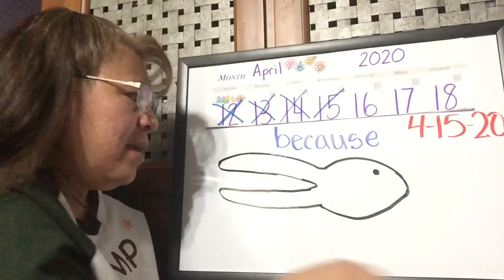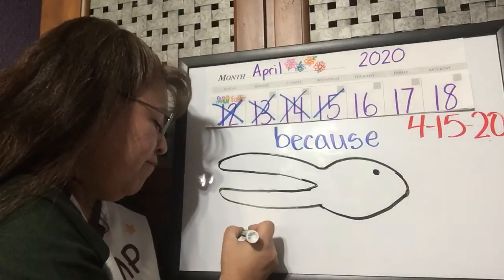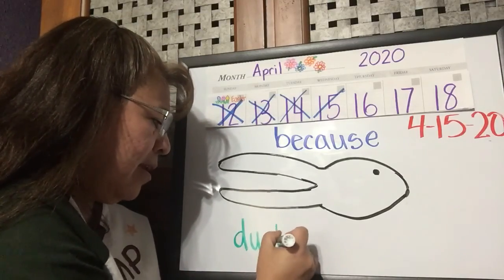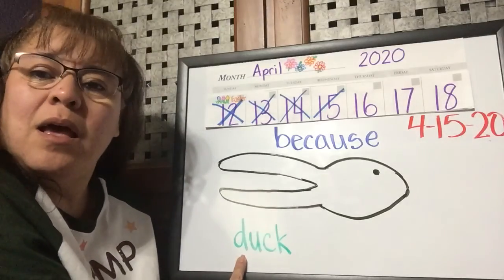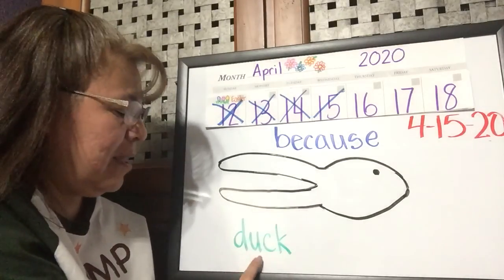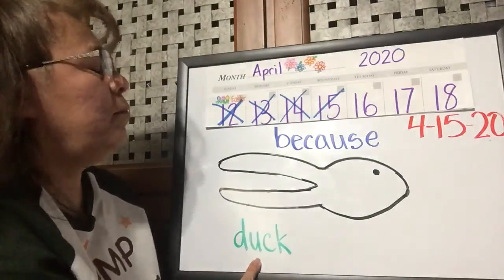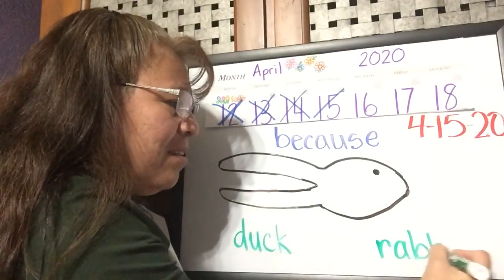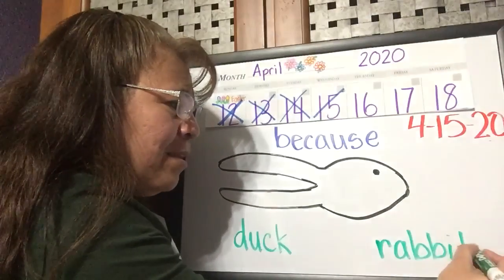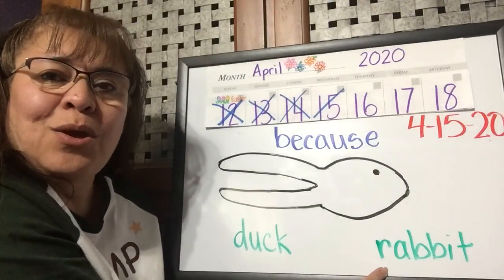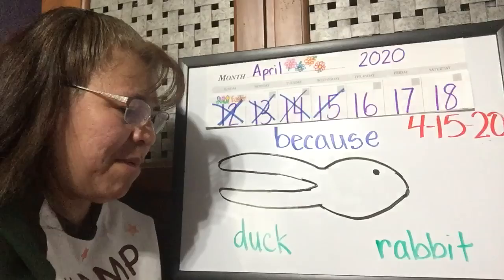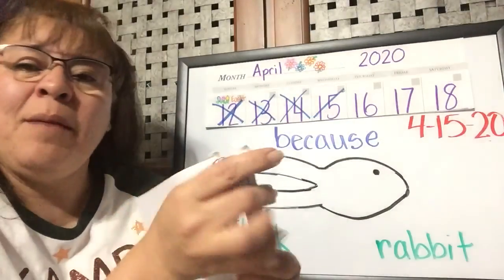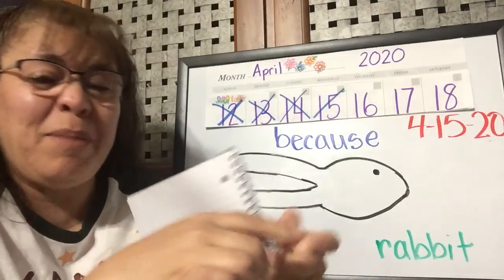So 'because' helps us explain or give our reason why we think it is a duck or a rabbit. Notice when I write the word 'duck' — D-U-C-K — it has a short 'u' in the middle. And 'rabbit' — look, it starts with an R! We were actually practicing our R's in handwriting today.